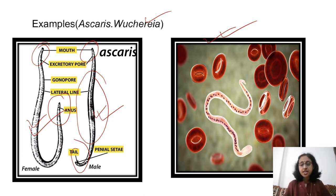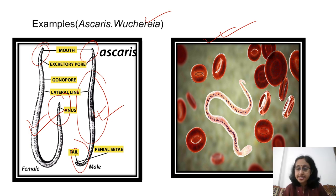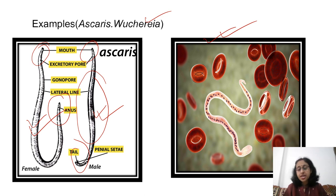That concludes today's episode. We have studied four phyla: Porifera, Coelenterata, Platyhelminthes, and Nematoda. In the next video we will study the remaining four phyla of the non-chordata or invertebrate group: Annelida, Arthropoda, Mollusca, and Echinodermata. After that we will start on vertebrates. Please go through your textbook and write any doubts or queries in the comment box so I can address them in the next episode. Thank you.